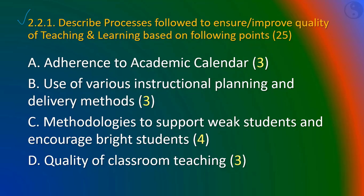Sub-criterion 2.2.1: the first item is adherence to academic calendar for 3 points. All institutes under some council or board follow the academic calendars provided by the council or board, but the department should have their own academic calendars for the session, and that should be in compliance with the council calendar.